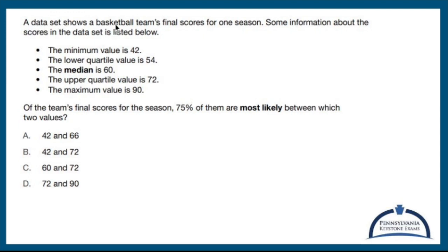A data set shows a basketball team's final scores for one season. Some of the information about the scores in the data set is listed below. Minimum value is 42. That means the lowest points they scored in a game this season was 42.